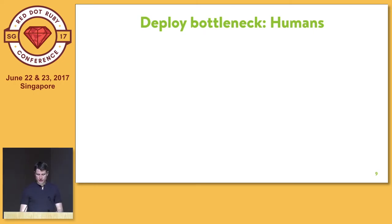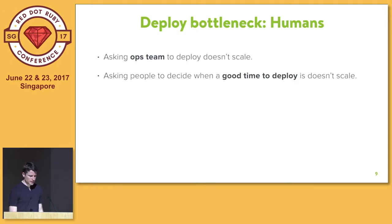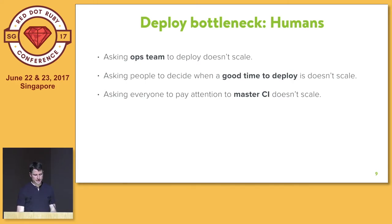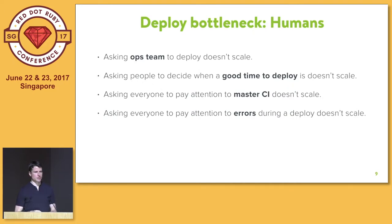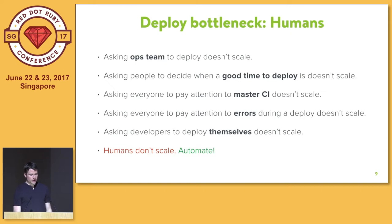The other bottleneck related to deploys is humans. At a smaller company you might have an ops team that deploys, but if you have 800 people all wanting to deploy, they can't all ask the ops team. So you need to allow people to deploy on their own. Having someone decide now is a good time to deploy doesn't scale. Asking everyone to pay attention to master CI status doesn't scale. Asking everyone to watch the deploy for errors doesn't scale. Even saying every developer can deploy themselves eventually doesn't scale. In summary: humans don't scale, and you should automate this process as much as you can.